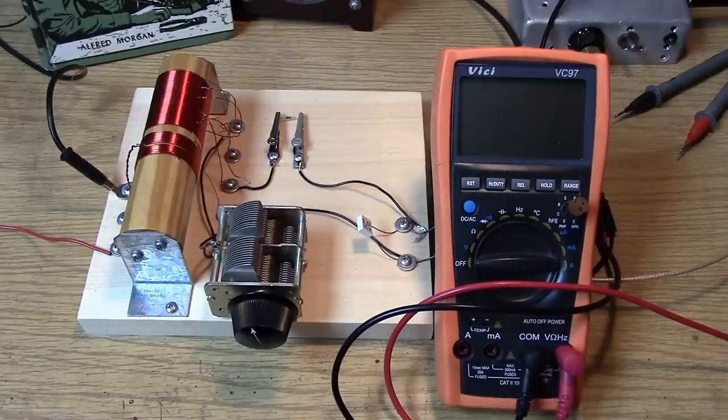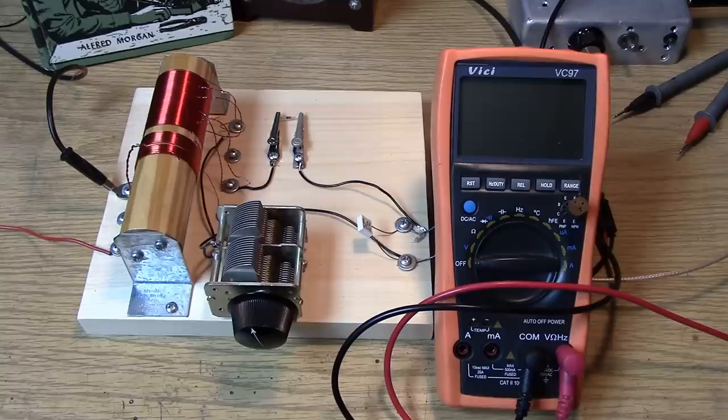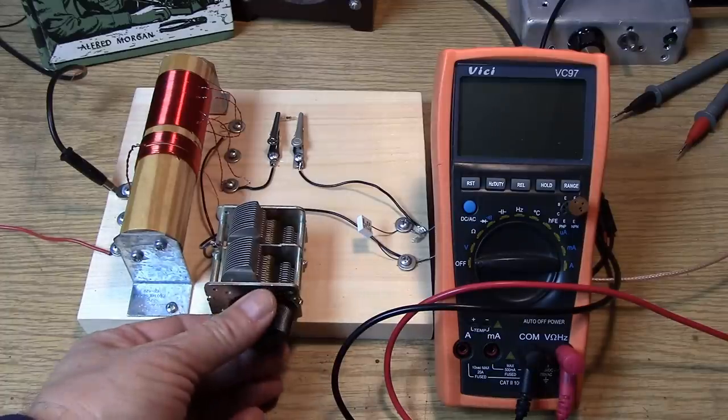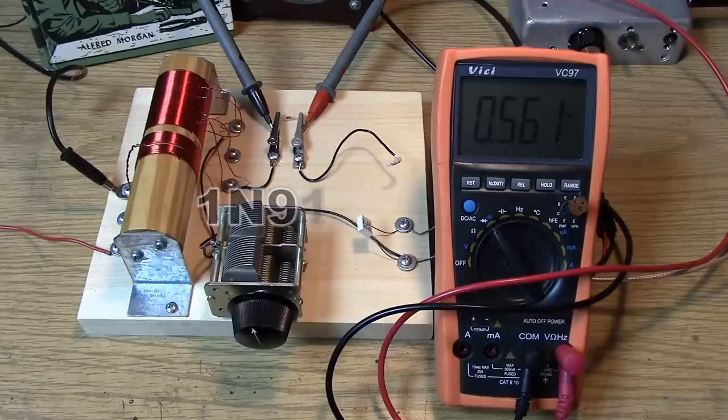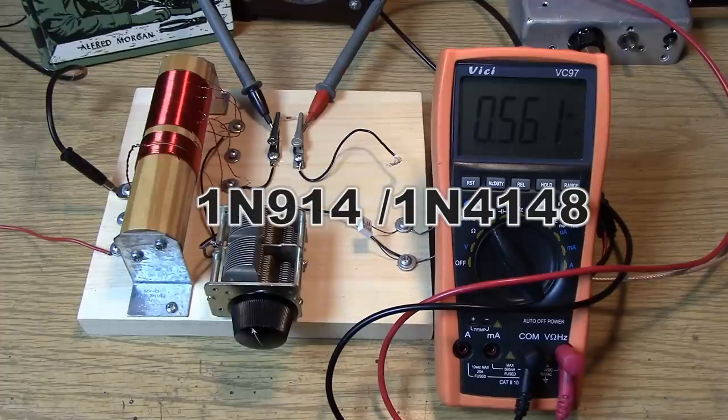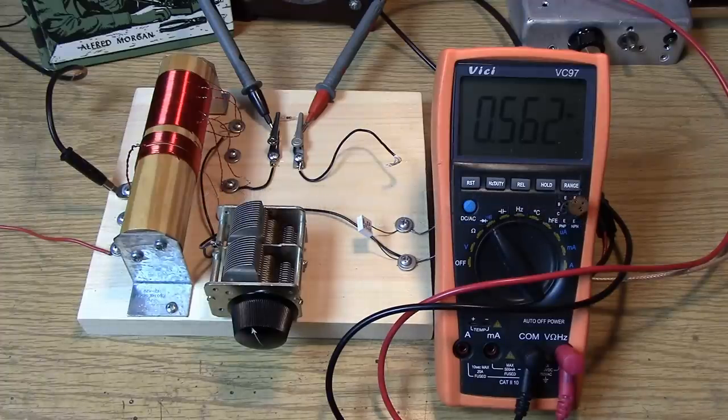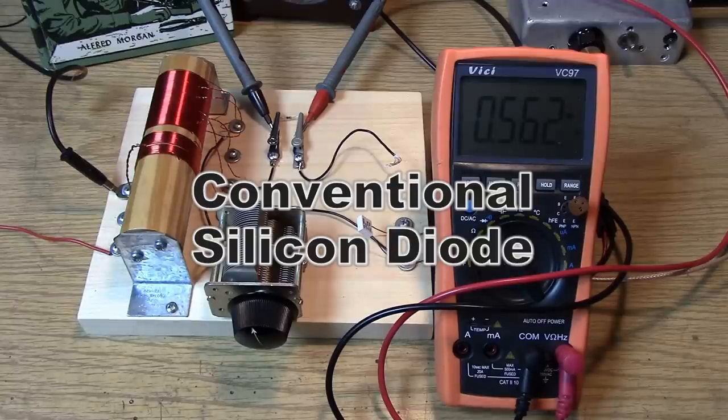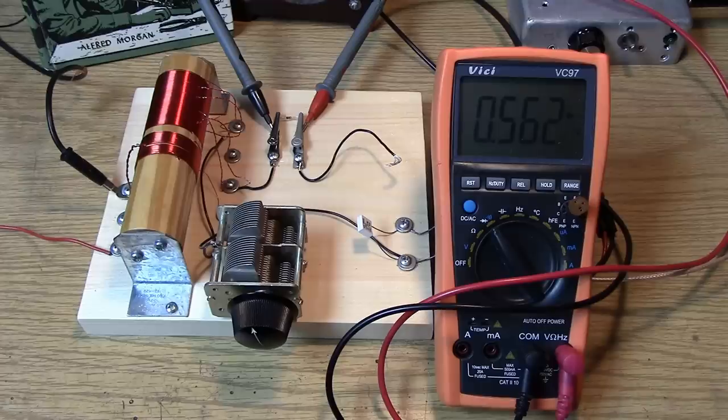So here is a 1N914 silicon diode, a switching diode. Nothing at all coming out on this weak station. The forward voltage drop on the switching diode is .561. So clearly, on weak signals, a diode with a voltage drop like this is not going to do any work at all.